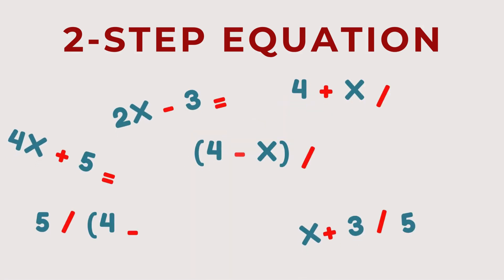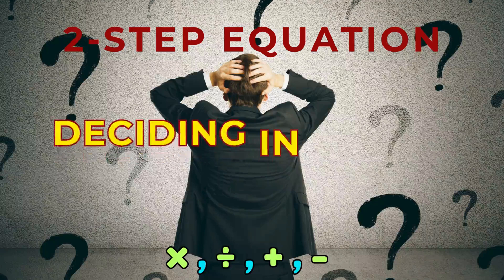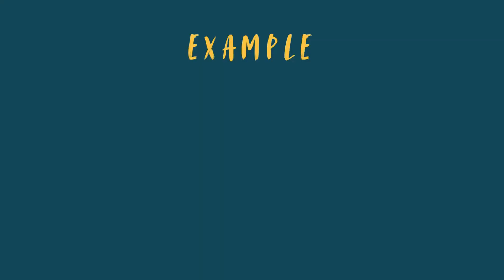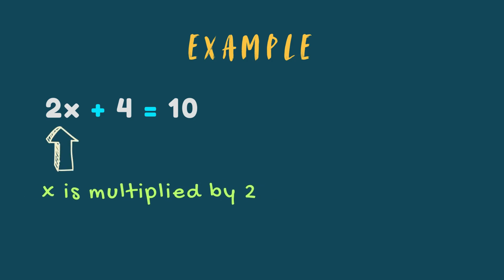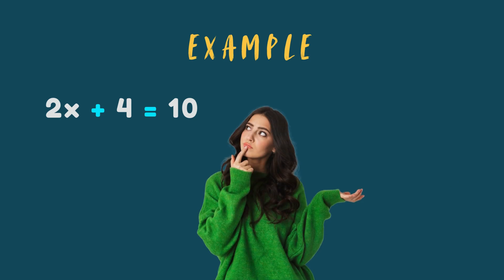Firstly, there are a lot more possible combinations of those two operations. Secondly, you have to decide what order to undo those operations when there's more than one operation to choose from. For example, take this equation: 2x plus 4 equals 10. Here, the unknown value x is tangled up in two operations — multiplication, where x is multiplied by 2, and addition, the plus 4 part. To solve for x, we need to undo both of these operations. Should we undo the multiplication first, or addition?